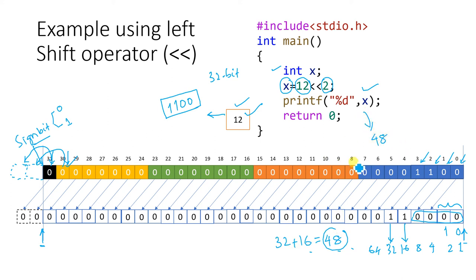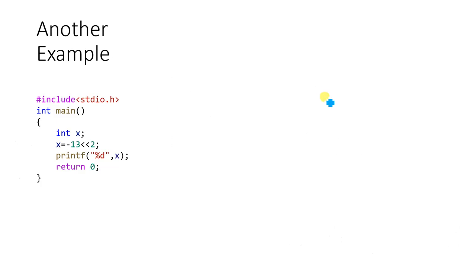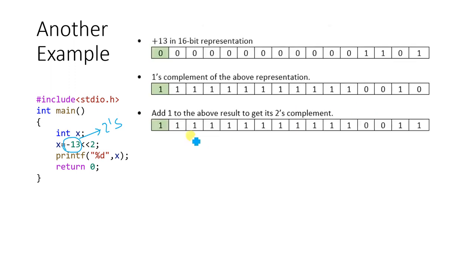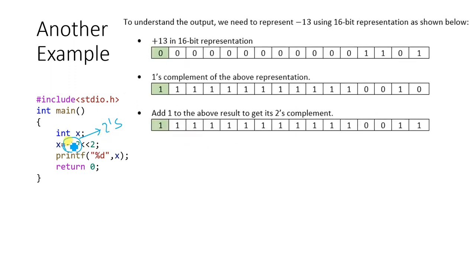Let us take another example quickly: minus 13 left shift 2. We need to represent minus 13 in two's complement representation. I am using 16 bits for this example due to space constraints. First, I take 13; in 16 bits, its binary representation is 1101. This 1, 1, 0, 1 is placed at the right side of the allocated boxes and the remaining bits are set to zero, representing positive 13.